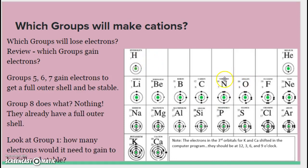Alright, so we know that group 5, 6, 7 are going to gain electrons. They will be anions. Group 8 are noble gases. They already have a full outer shell. They're not going to do anything.